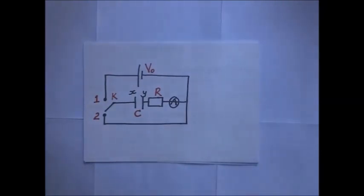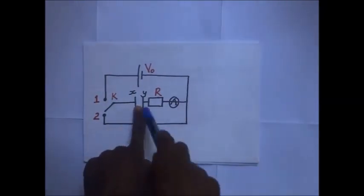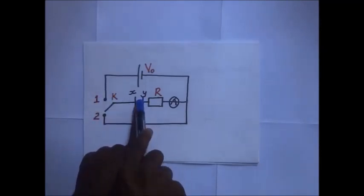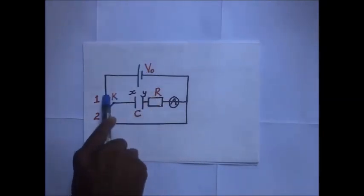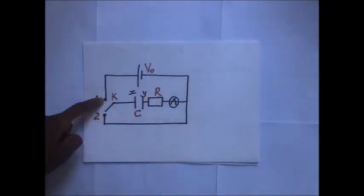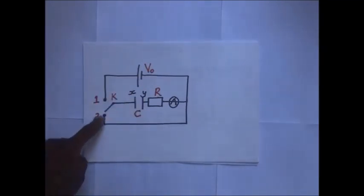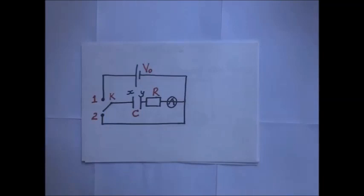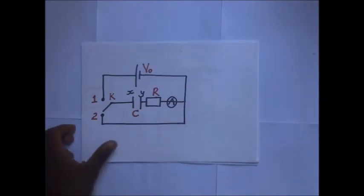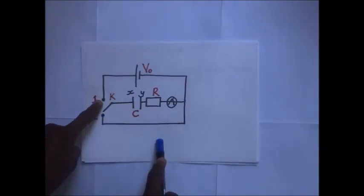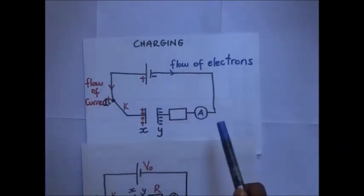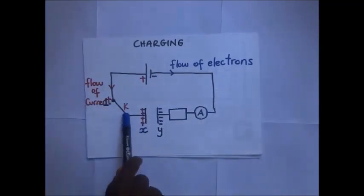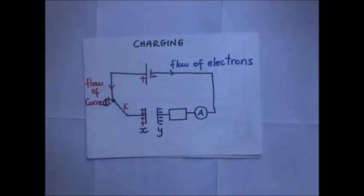When we want to charge this capacitor we connect the switch to terminal one so it gets charged. It gets its charge from the source voltage in the upper circuit. If we want to discharge this capacitor we connect it to terminal two. Now let's explain exactly what happens during charging: the switch is connected to terminal one, meaning the lower circuit is out of the picture.